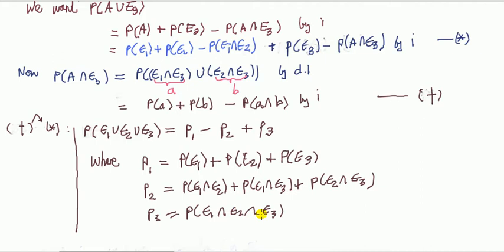Sum of the probabilities minus all the pairwise intersections plus the intersections of all three events. Now you can imagine repeating this for instead of three events, four events, five events, six events.